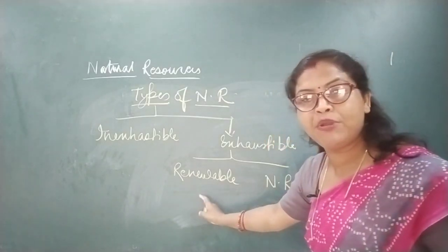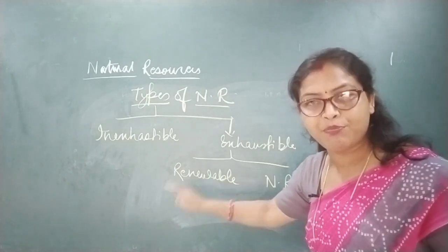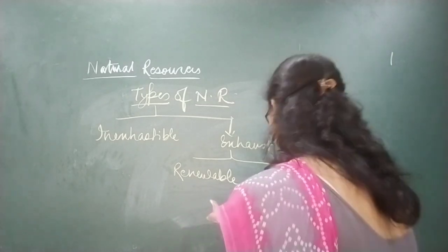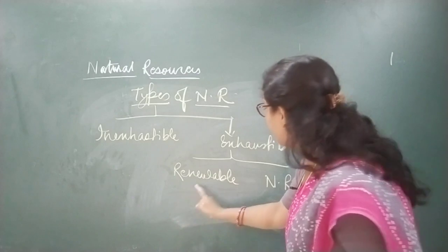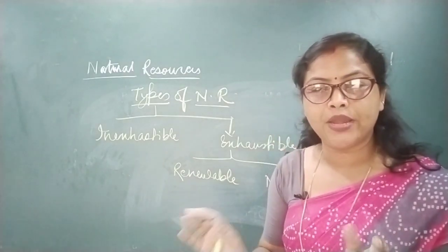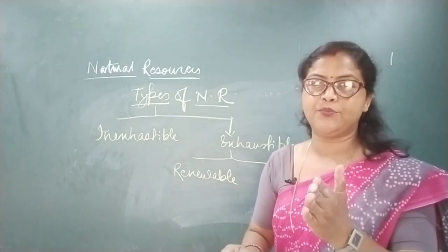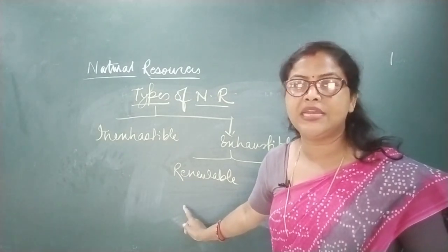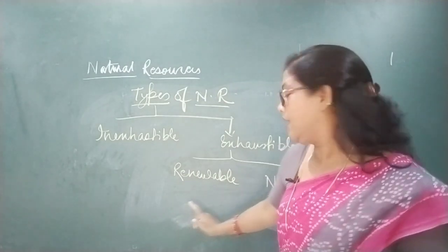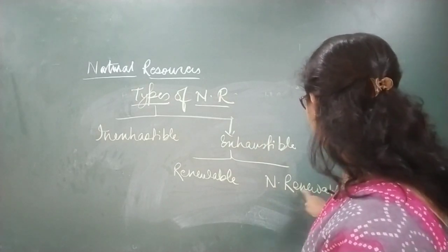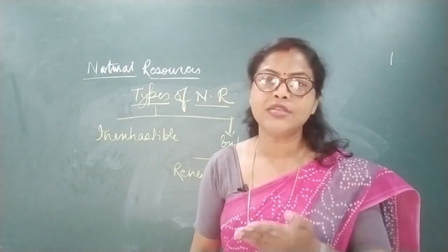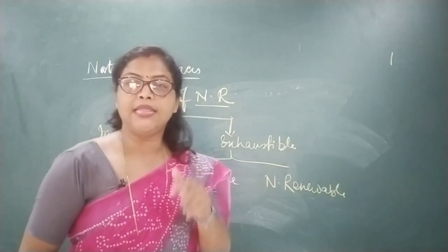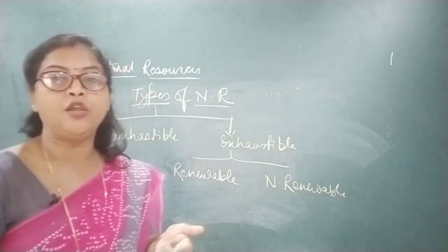Renewable resources can be replenished again. Renewable substances include soil, underground water and forests — once a forest is over, by the process of afforestation or reforestation we can get it back; soil also we can get back by preventing its loss. Non-renewable substances are fossil fuels and minerals. Once they are exhausted, they can't be replenished and they take lots of time to be created.